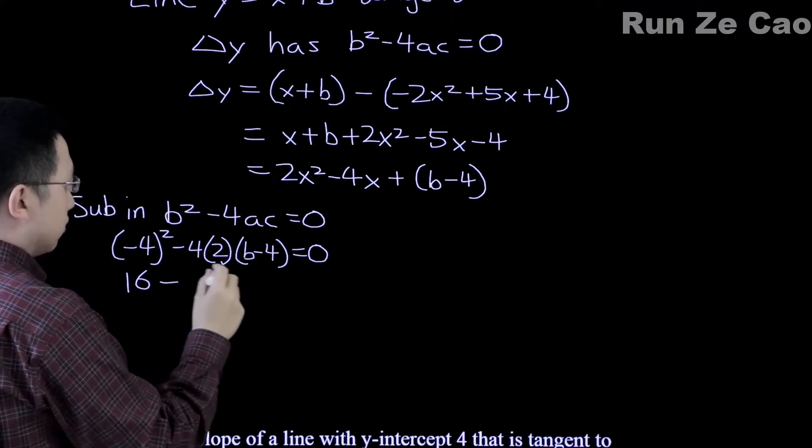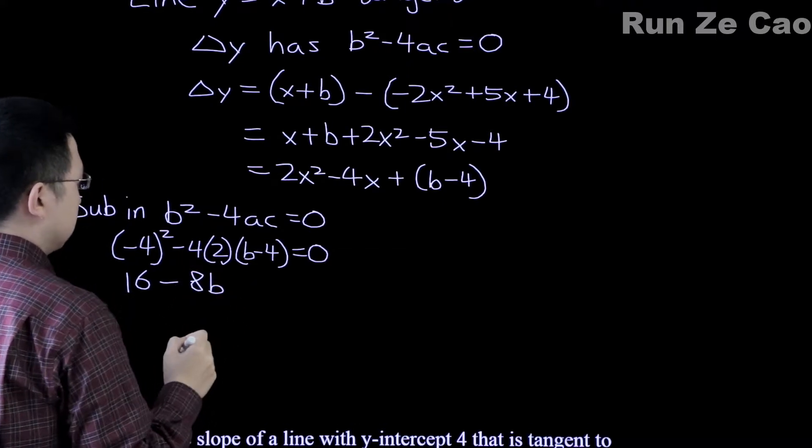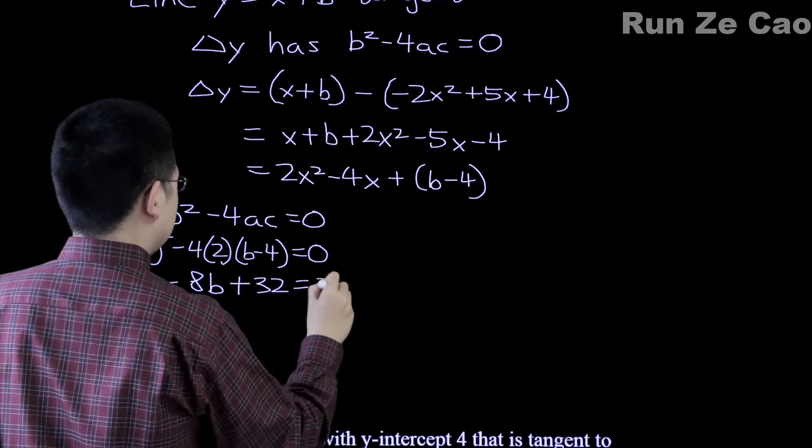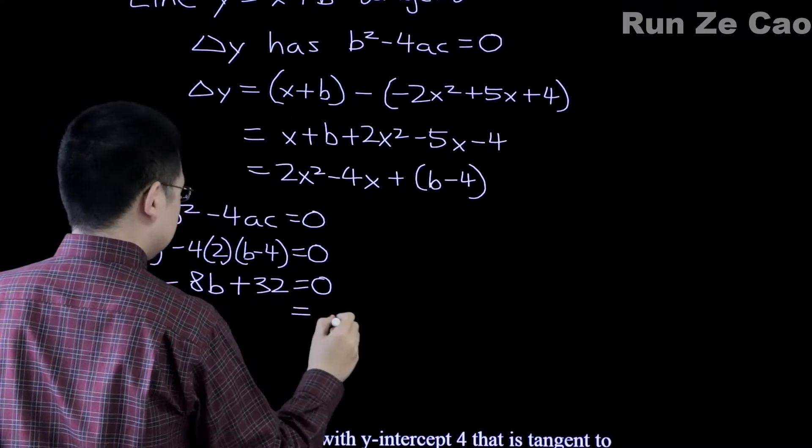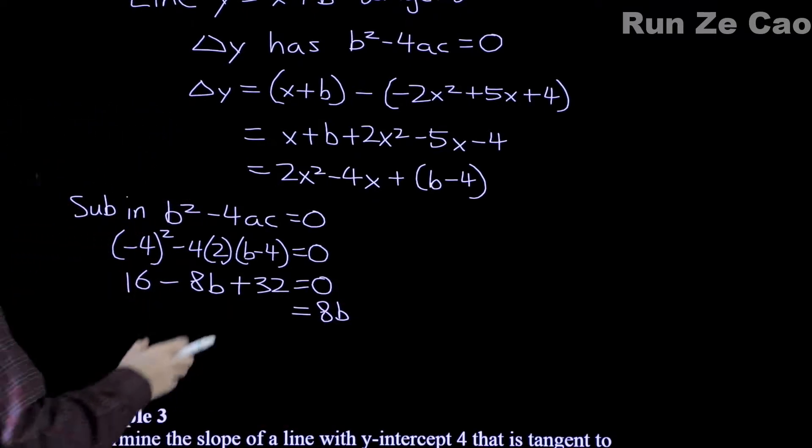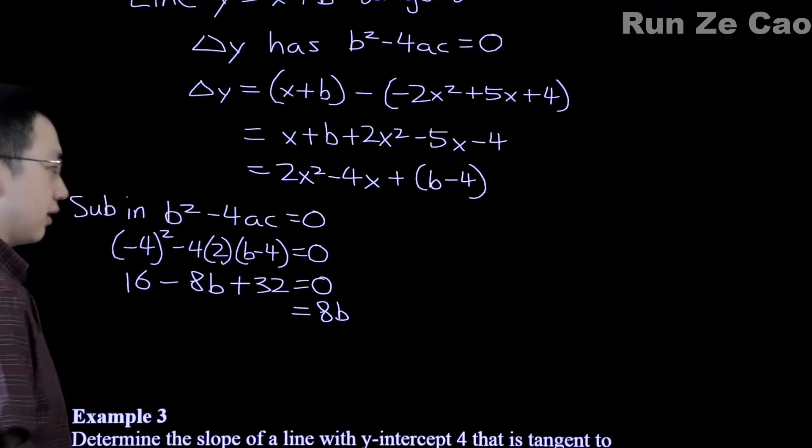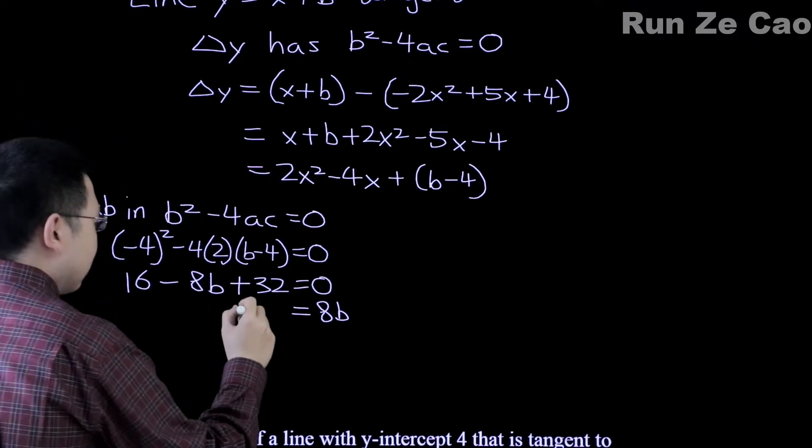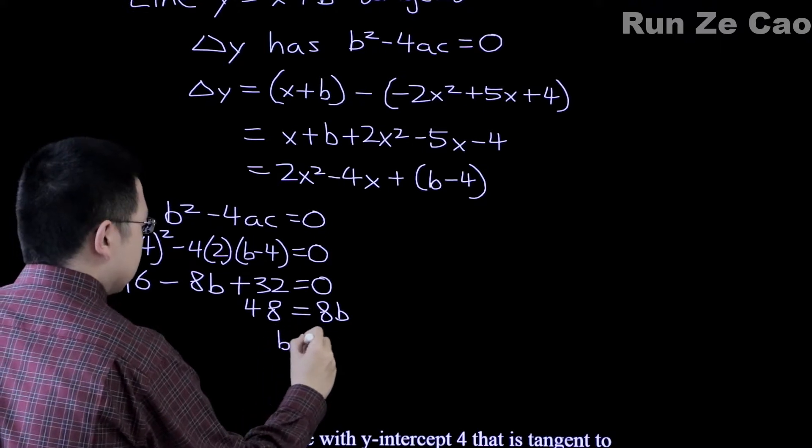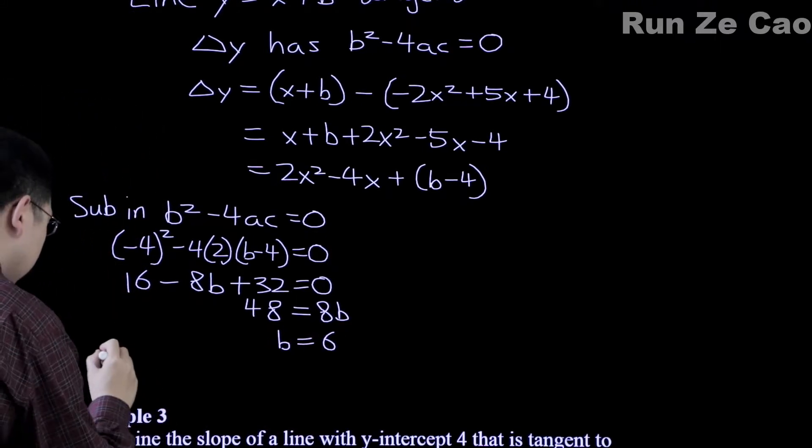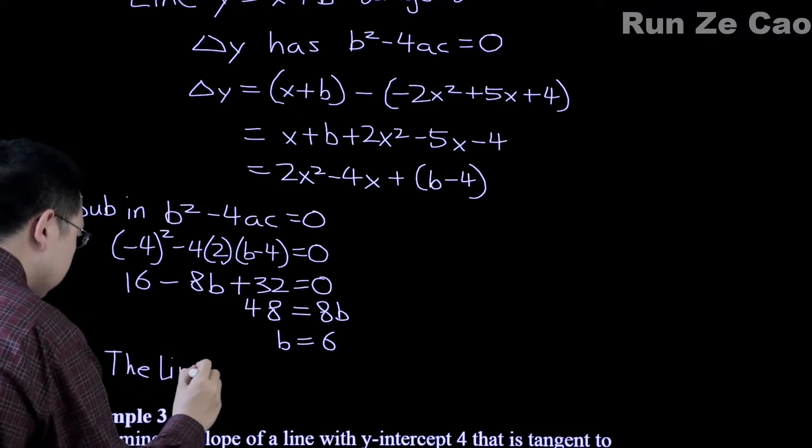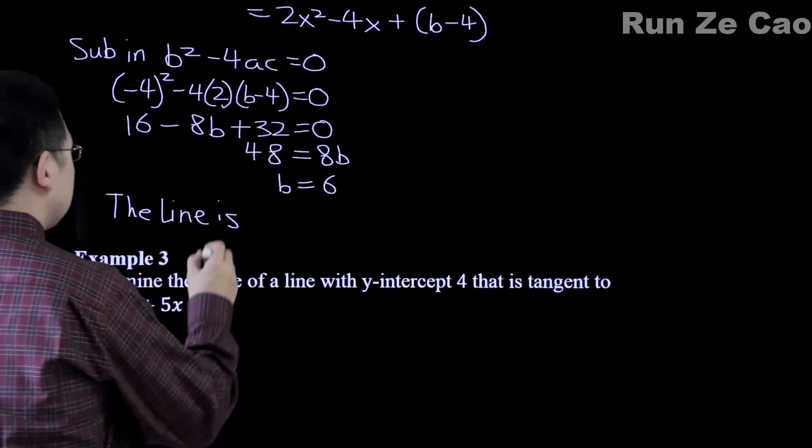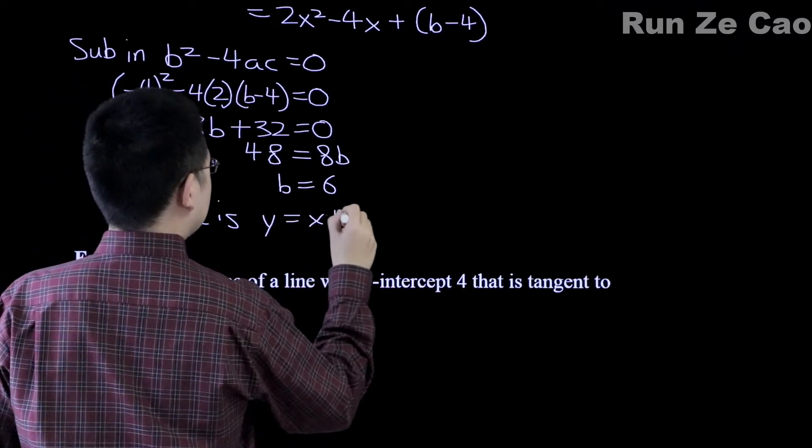Now negative 4 squared is 16 minus 4 times 2 times b is 8b. 4 times 2 times 4 is 32 equals 0. So we get 8b - because in previous experience I find students seem to take it better if I don't move things over and add at the same time - so this is equal to 48, and b equals 6. The line is y equals x plus b, y equals x plus 6.